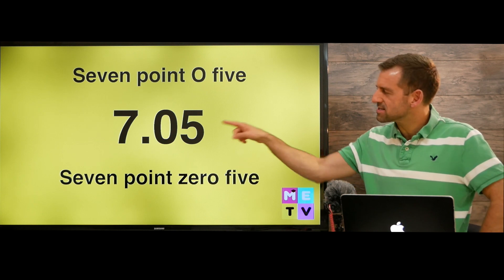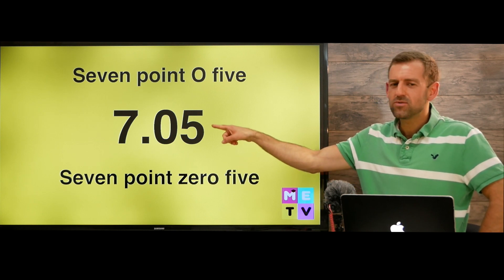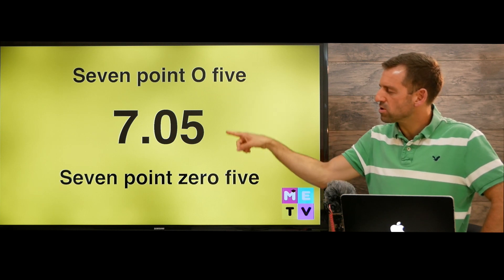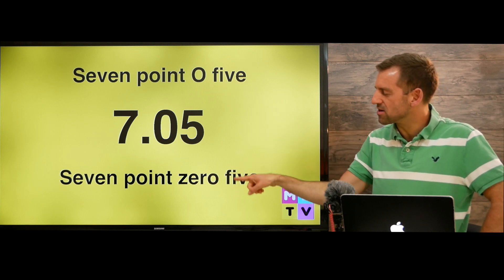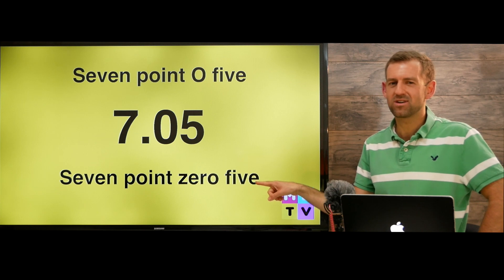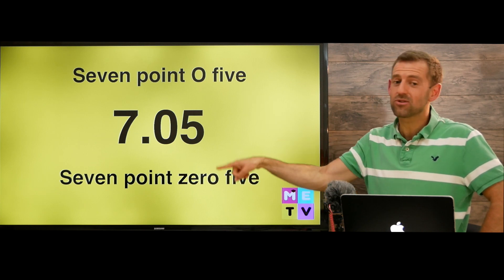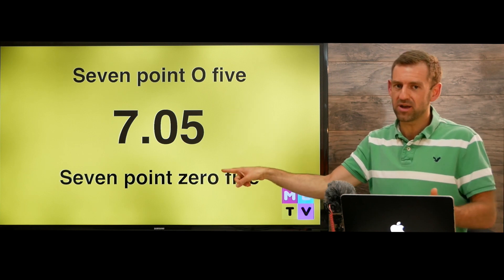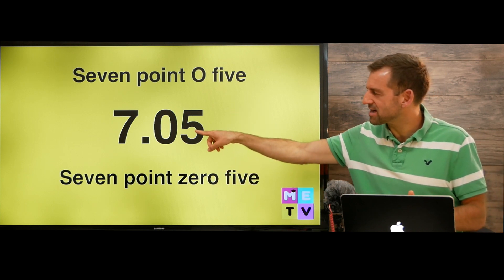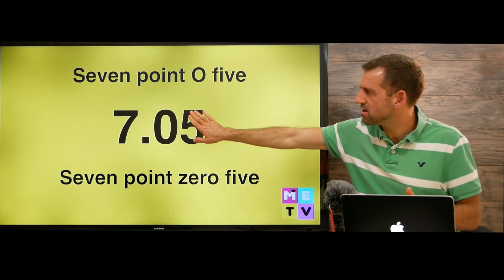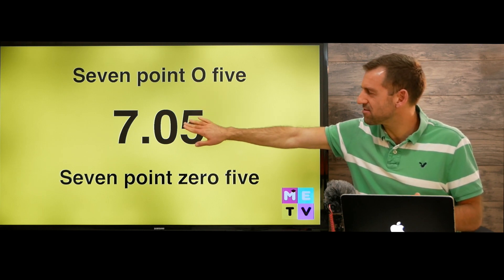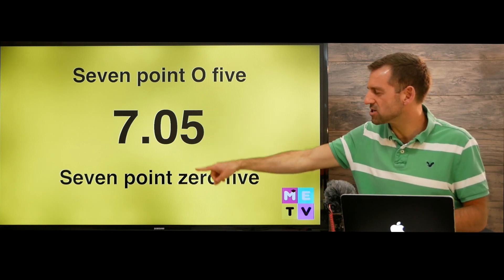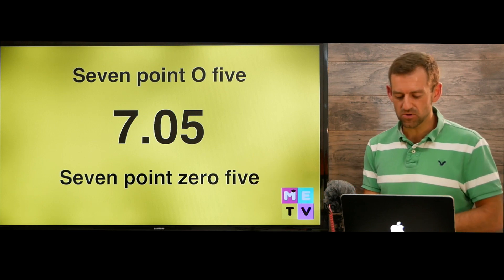Now look at this number here. Should we say 7.05 or should we say 7.05? Well, you can use either one — they're both correct, but this one is a little bit better. So if you see a number like this and it was just 7.0, then saying 'oh' would be better. But if it's 7.05 or some more numbers like that, then it's better to use the word 'zero' — it's a little bit less confusing.